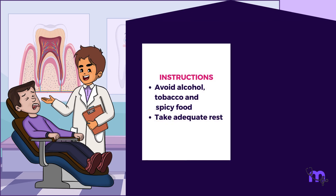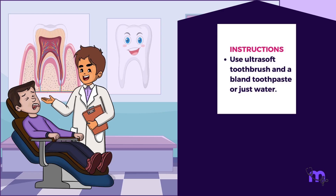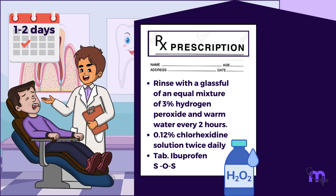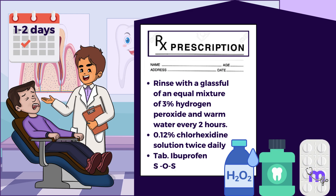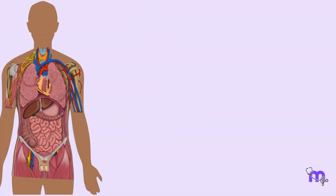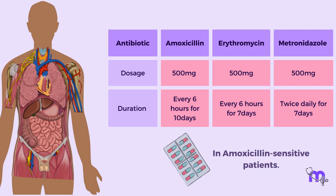Before discharge, I gave these instructions to my patient: avoid alcohol, tobacco, and spicy food; get adequate rest; using an ultra-soft brush, restrict tooth brushing to remove surface debris using a bland toothpaste or just water; rinse with a glass of equal mixture of 3% hydrogen peroxide and warm water every 2 hours, and/or 0.12% chlorhexidine solution twice daily; take an analgesic for pain relief; and report back in 1-2 days. As the patient was free of systemic complications, I did not recommend antibiotics. If systemic complications are present, antibiotics may be prescribed: amoxicillin 500mg orally every 6 hours for 10 days, erythromycin 500mg every 6 hours, or metronidazole 500mg twice daily for 7 days in amoxicillin-sensitive patients.